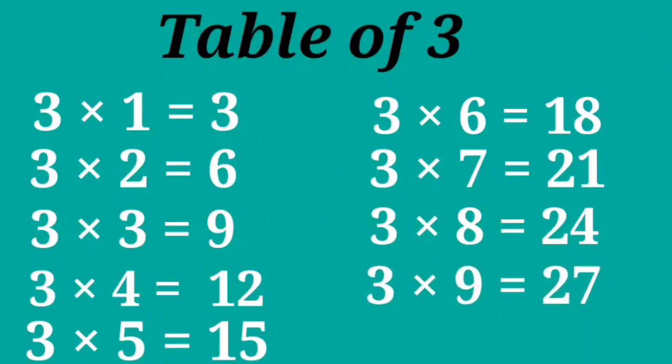Three nines are twenty-seven, three tens are thirty. That's all for today, thanks for watching.